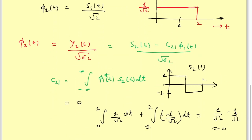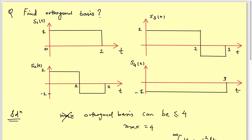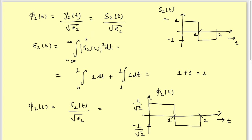Since c21 = 0, gamma_2(t) = s2(t). The energy of gamma_2(t) is integral of |s2(t)|² dt. From 0 to 1 it is 1 and from 1 to 2 it is minus 1, but squared both give 1. So E2 = 1 + 1 = 2. Therefore phi_2(t) = s2(t) / sqrt(2).